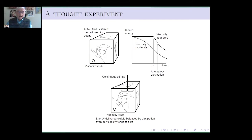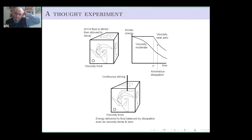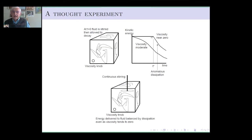Let's do a little thought experiment. Let's take a box of fluid — a Navier-Stokes fluid — where the fluid sticks to the walls. We have a little knob which can control the viscosity. I'll consider an initial value problem: we somehow stir the fluid vigorously for a while and then stop and let it decay on its own. Of course, it's a viscous fluid — it will decay — and if the viscosity is fairly substantial, it's going to start decaying very quickly, and it will continue to decay down to zero eventually.